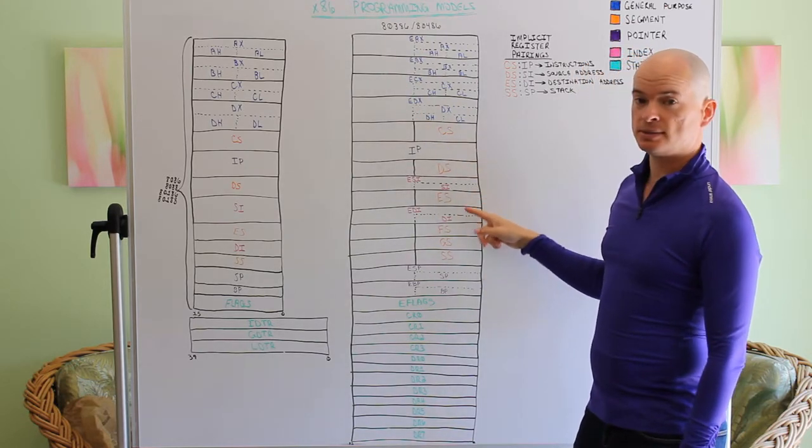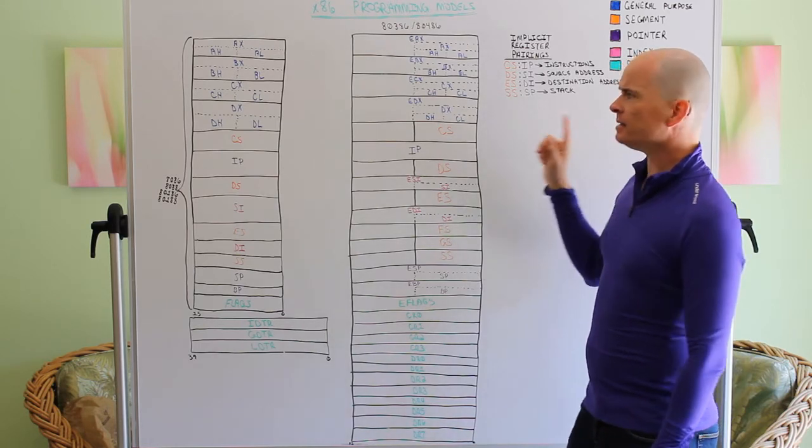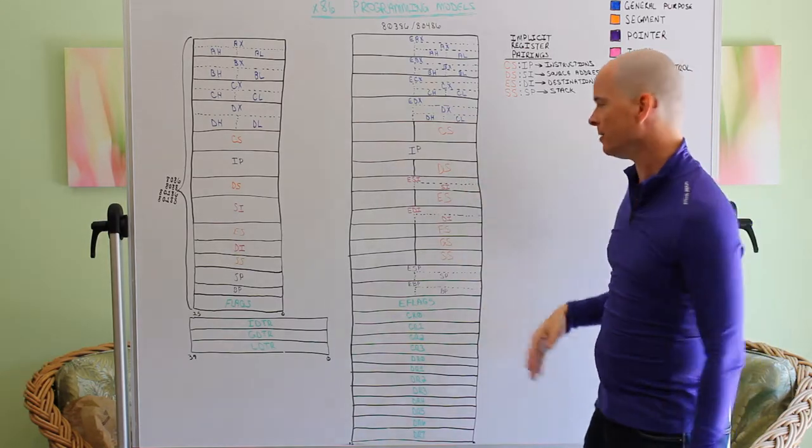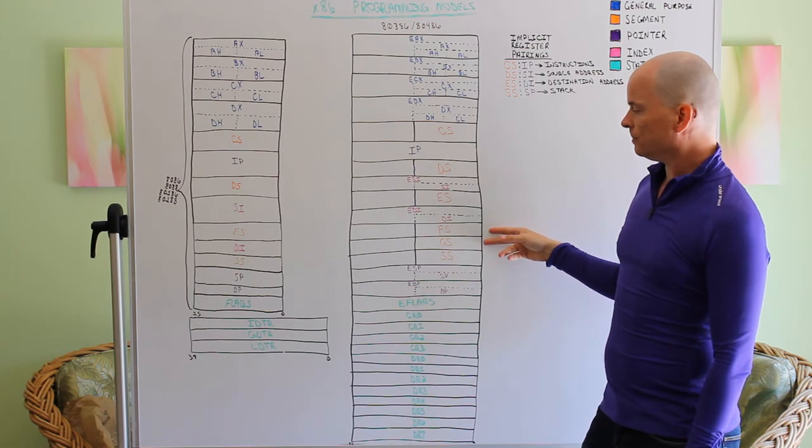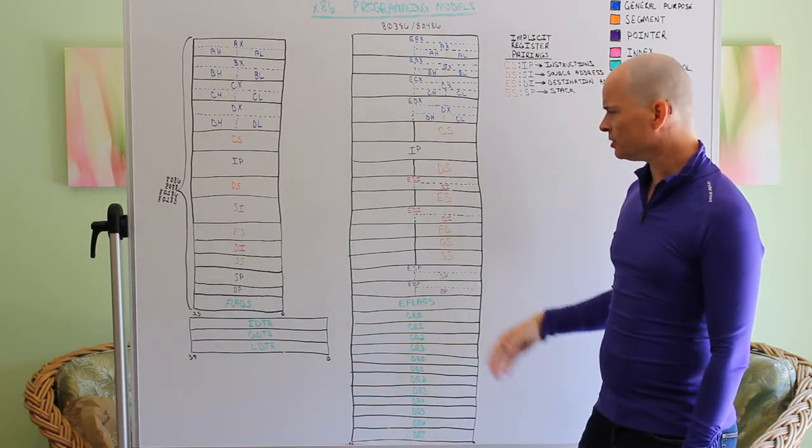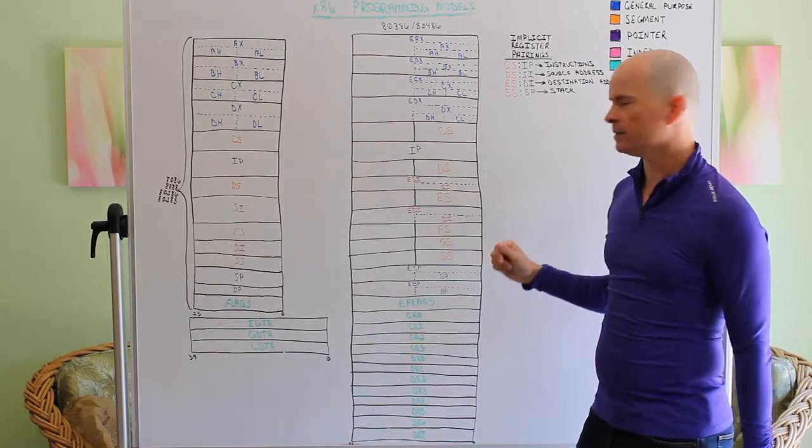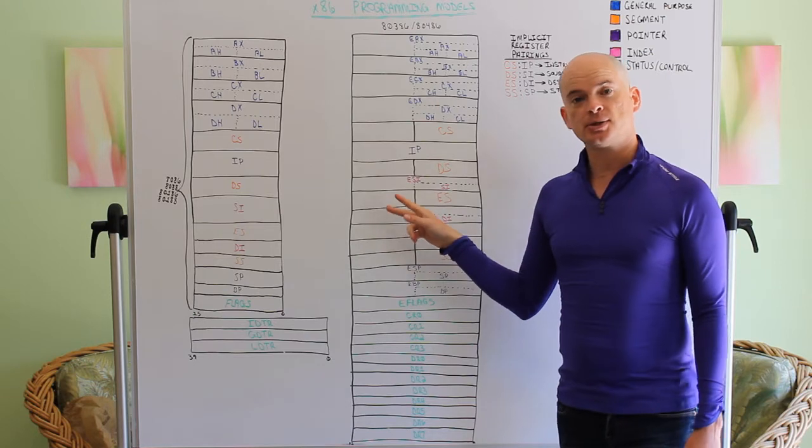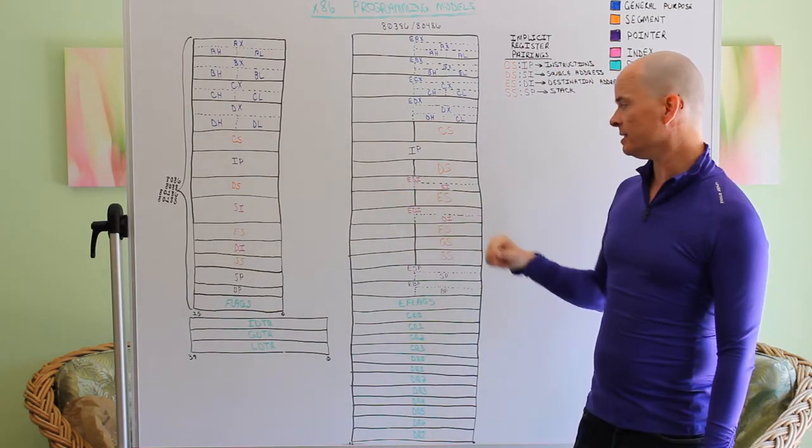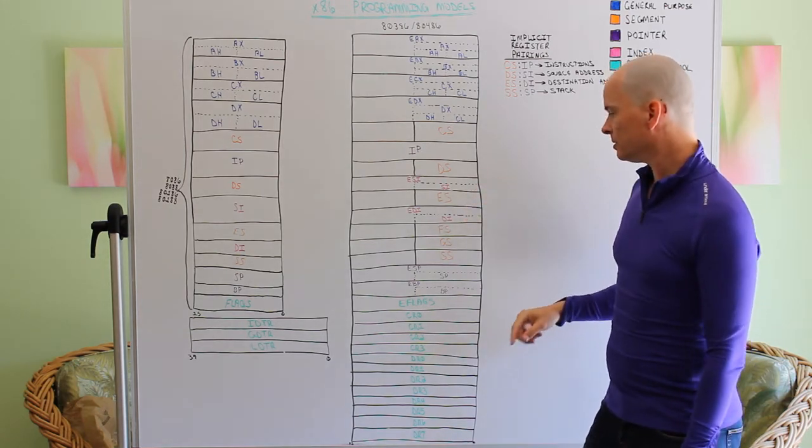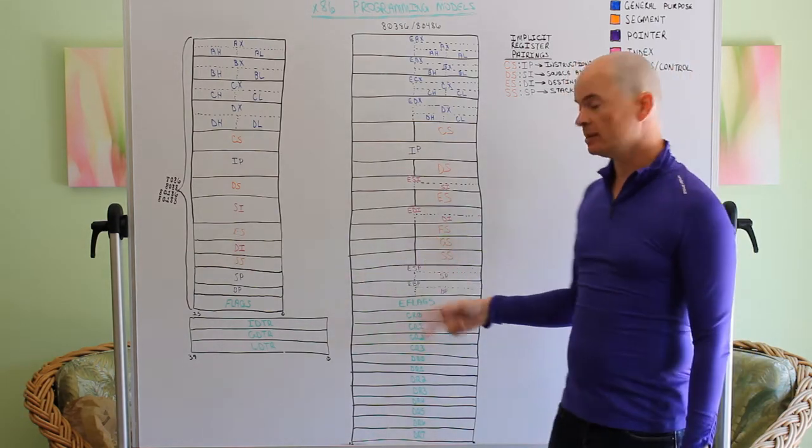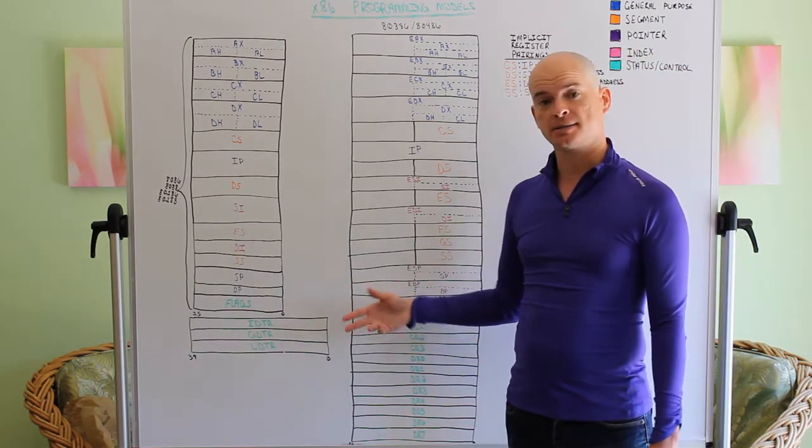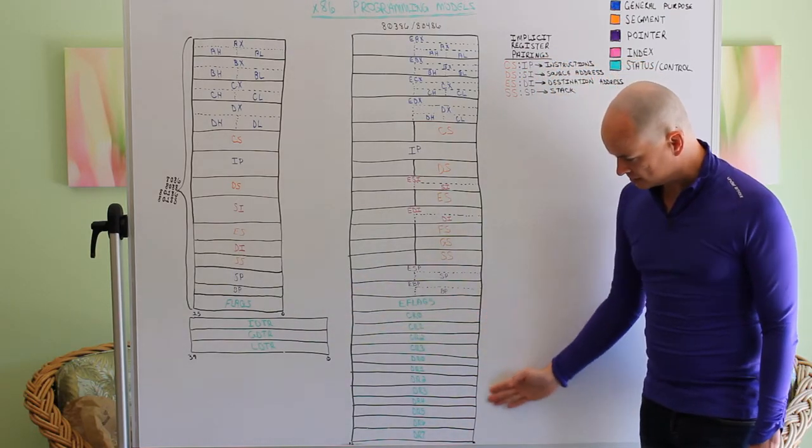We still have these segment registers and they're still 16 bits wide, which might seem kind of strange on a 32-bit processor. But once we figure out what they're actually doing with a 32-bit processor, that'll make sense. We've also got two additional segment registers here called the FS and GS. They're just additional segment registers, there's nothing special with them. We've got a 32-bit instruction pointer here. Our source and destination index registers have been extended to 32-bits, ESI and EDI, but we can still use them as 16-bit registers. Our stack pointer and base pointer have also been extended to 32-bits but we can still use them as 16-bits. We have a flag register which is called E-Flags. We have some extra flags in here,